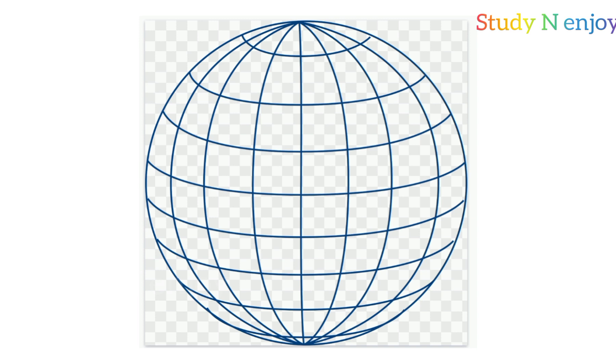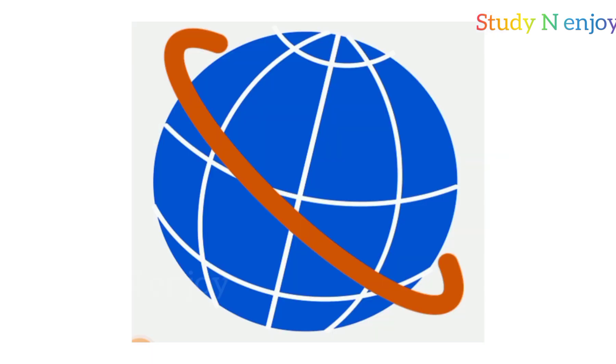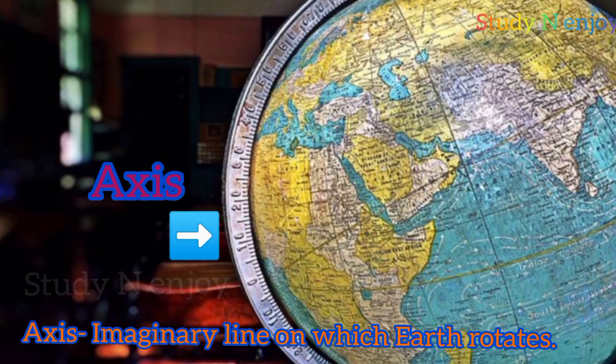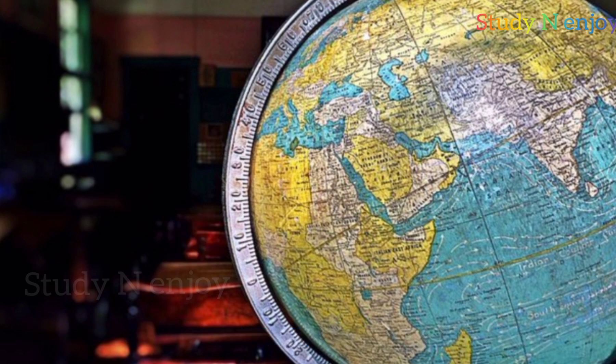What is the purpose of these imaginary lines? The famous Egyptian traveler Eratosthenes calculated the circumference of the earth. He realized that any place in the world can be pinpointed precisely. The axis of the globe is the line on which it rotates. Just as the globe, the earth also rotates on its own axis.